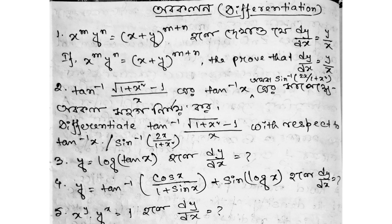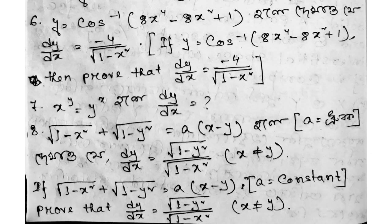Question 5: x to the power y multiplied by y to the power x equals 1, find dy/dx. Question 6: y equals cos inverse (8x to the power 4 minus 8x squared plus 1), find dy/dx.